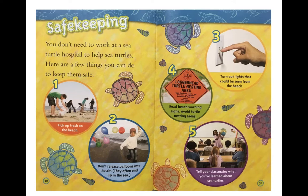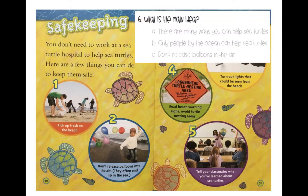Safekeeping: you don't need to work at a sea turtle hospital to help sea turtles. Here are a few things you can do: number one, pick up trash on the beach; number two, don't release balloons into the air — they often end up in the sea; number three, turn out lights that could be seen from the beach; number four, read beach warning signs and avoid turtle nesting areas; number five, tell your classmates what you've learned about sea turtles. Number six on your paper: what is the main idea of this section?